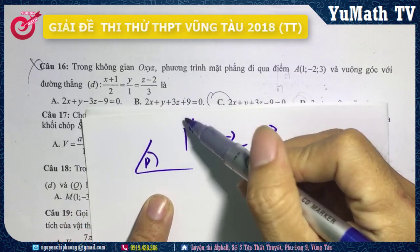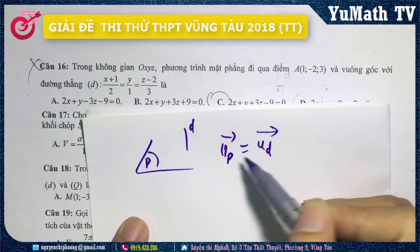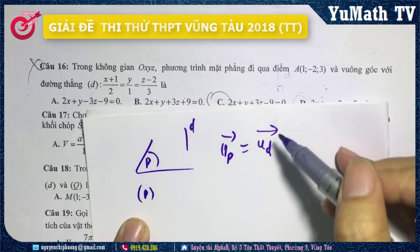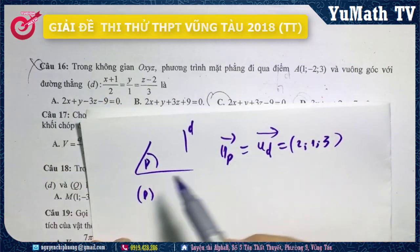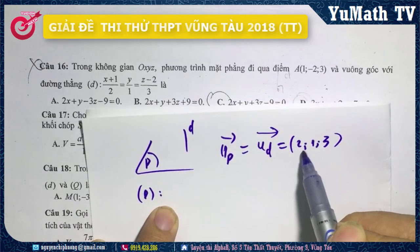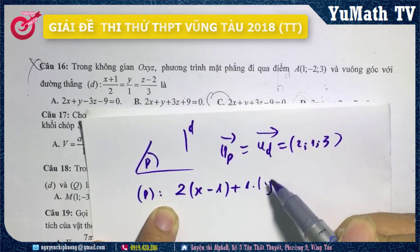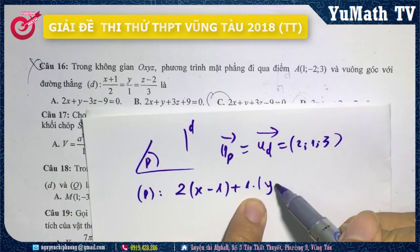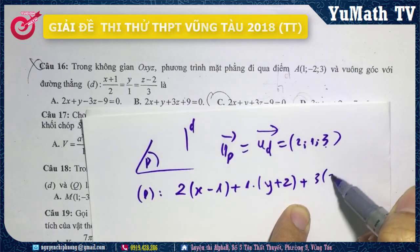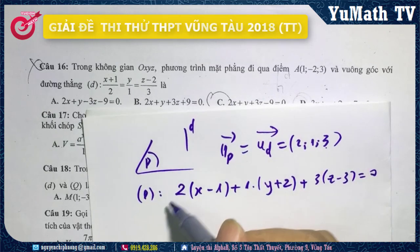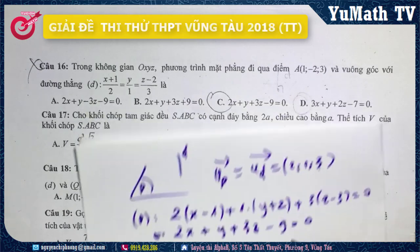Vector chỉ phương của D có giá song song với D, nên nó vuông góc với mặt phẳng P. Như vậy mình đã biết được 2 yếu tố: điểm thuộc và vector pháp tuyến. Vector chỉ phương của D là (2, 1, 3), đây cũng chính là vector pháp tuyến của P. Phương trình mặt phẳng P: 2(x-1) + (y+2) + 3(z-3) = 0, khai triển ra được 2x - y - 3z - 9 = 0. Như vậy mình chọn đáp án C.